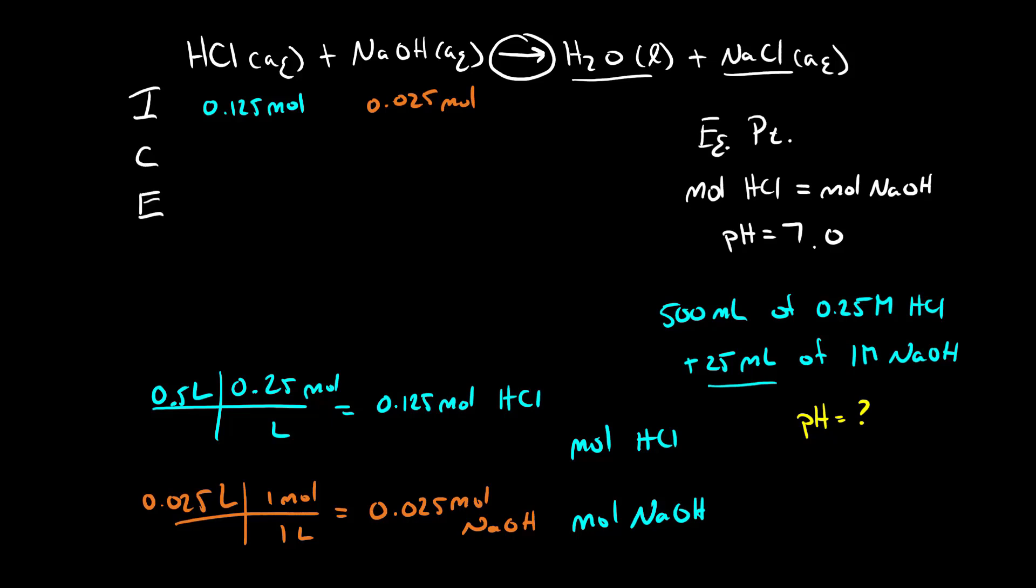We have our ICE table here, we figured out our initial amounts. In this case 0.025 is smaller than 0.125 so I'm going to lose 0.025 moles from both sodium hydroxide and from hydrochloric acid.